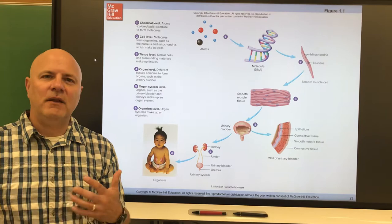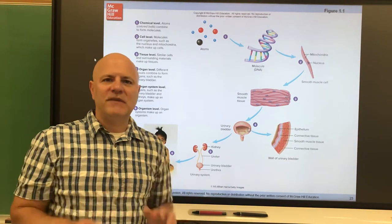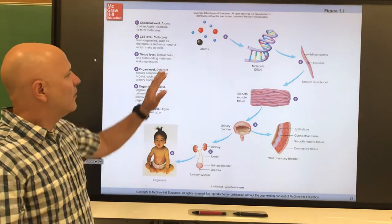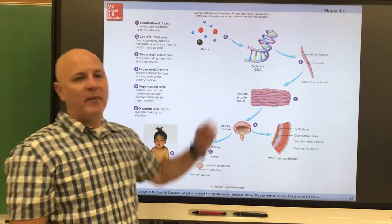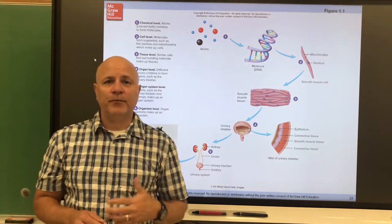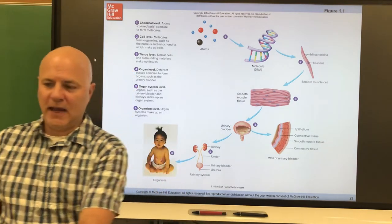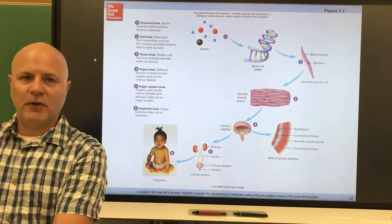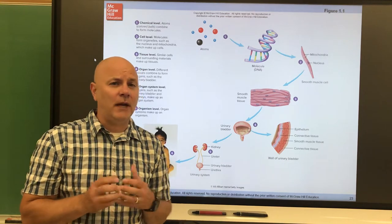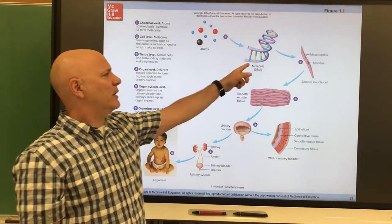Atoms are made of smaller things, but if we take some of those smaller things away it loses its function as that element — you can take a chemistry class to learn more. If we take a couple of atoms together we can make a molecule. A molecule is a particle composed of two or more joined atoms. It can be something very small like water, which only has three atoms.